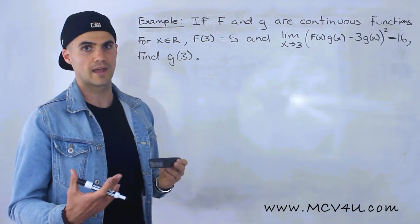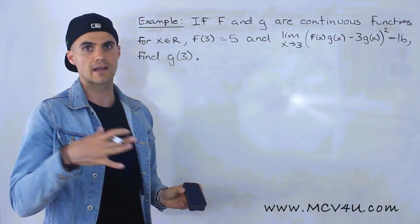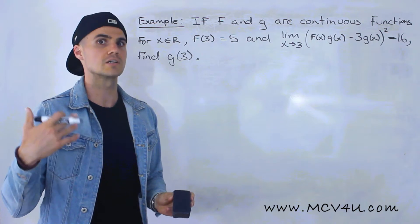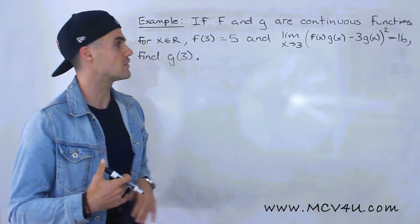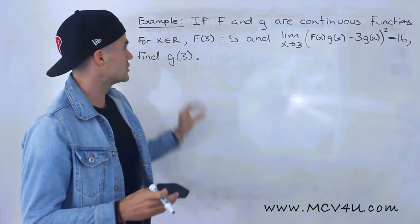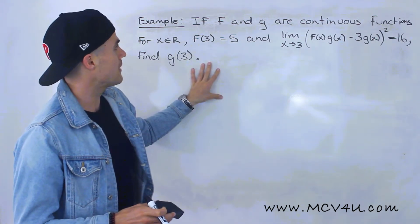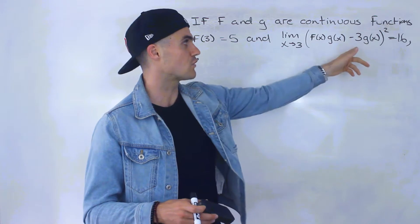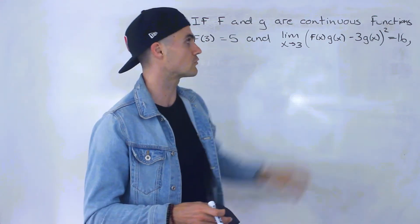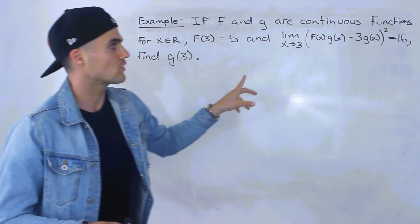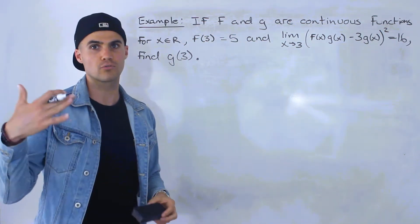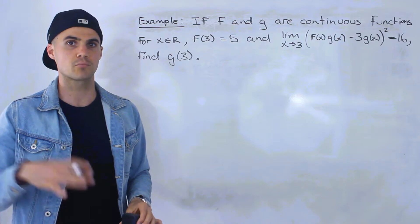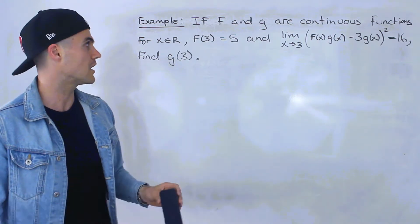This is a pretty cool question, and it's going to combine properties of limits and the definition of continuity. If you didn't watch videos on those two subjects before in the course, I highly recommend you watch those before this example. Looking at the example, you may be tempted to just plug in 5 for f(x) and solve for g(x) because it'll be the only variable remaining. However, you wouldn't get full marks for that. You have to go through the work using properties of limits and the continuity property.